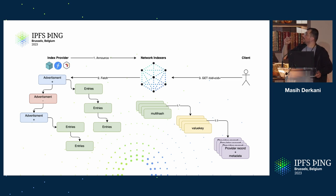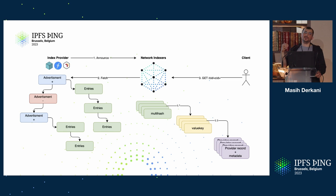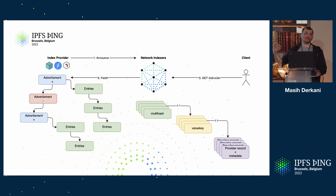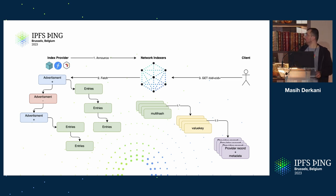Advertisements are chained together and signed at every step of the way. This allows the whole ecosystem to prove that a peer indeed claimed to provide a multihash, because everything is signed. This is a window into a whole body of work around reputation — you can prove that a node told you it had certain information, and since it hasn't advertised removal, you can hold it accountable. This concept of accountability is built into the advertisement chain, typical of a blockchain-like data structure.